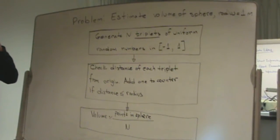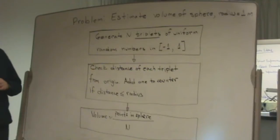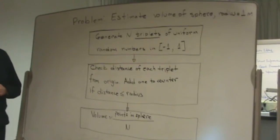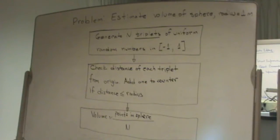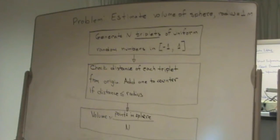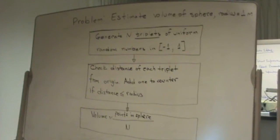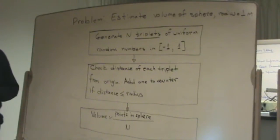We'll estimate the volume of a sphere with radius one meter using simulation. If you look at a handbook, or remember from calculus or geometry, the equation for the volume of a sphere is four-thirds pi times the radius cubed. But let's pretend that we don't know this equation, so we'll solve this problem with simulation and compare the results with the formula.